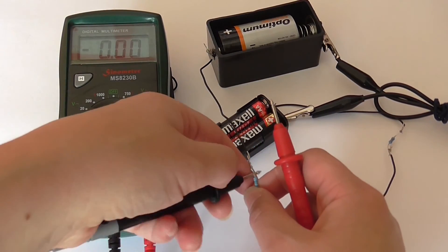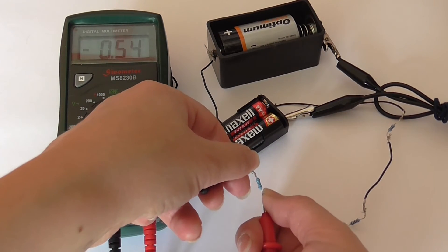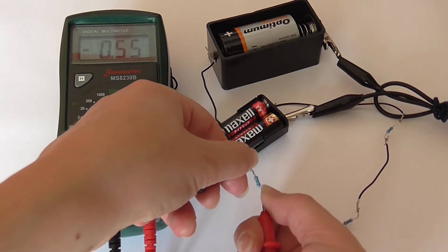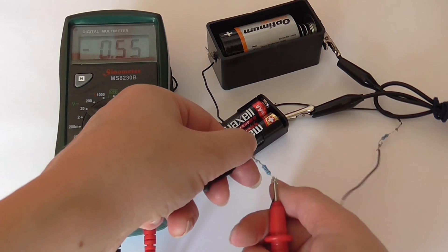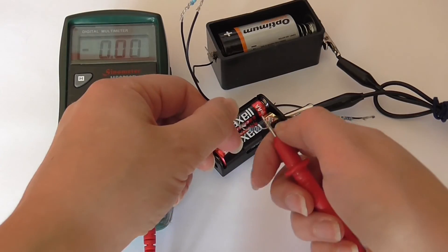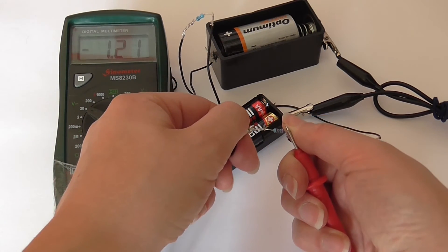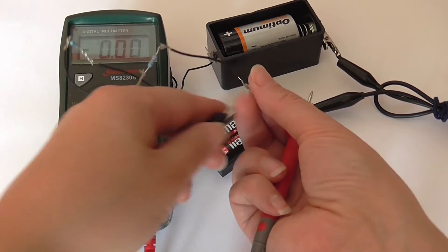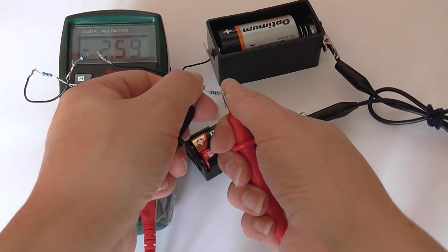The potential difference across resistor 1 is 0.55 volts. The potential difference across resistor 2 is 1.21 volts. The potential difference across resistor 3 is 2.59 volts.